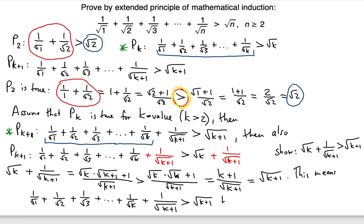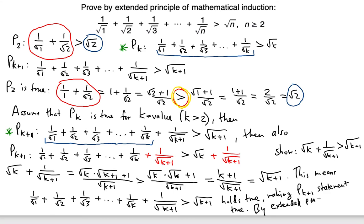So P(k+1) is true, completing the inductive step. By the extended principle of mathematical induction, P(n) is true for all n ≥ 2. Be sure to always indicate the constraint — since this is the extended principle, n must be greater than or equal to 2.